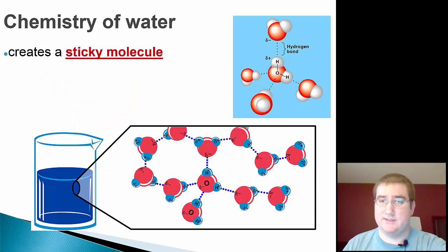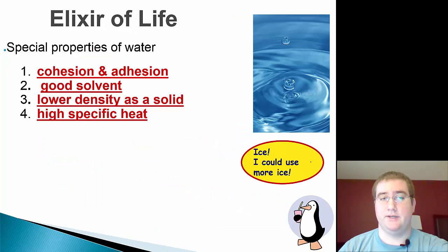So because of this hydrogen bonding, this ability to hydrogen bond, it creates a sticky molecule, which is why in a glass water is all stuck together. When you pour it out, you don't have individual water molecules coming out. You actually have all the water molecules coming out stuck together in a big long chain.